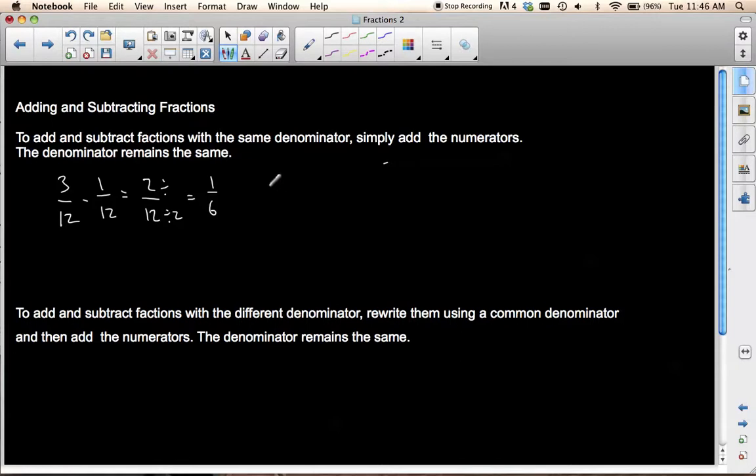Or if I had something like 5 over 9 minus 2 over 9. Well, 5 minus 2 would give me 3. My 9 stays the same.